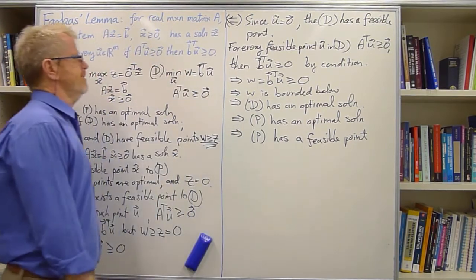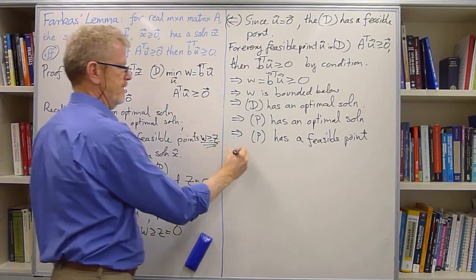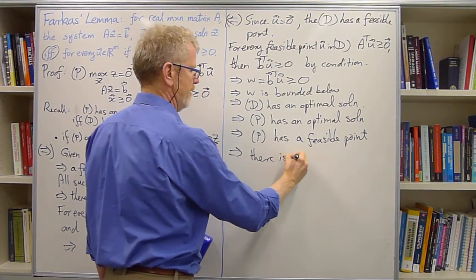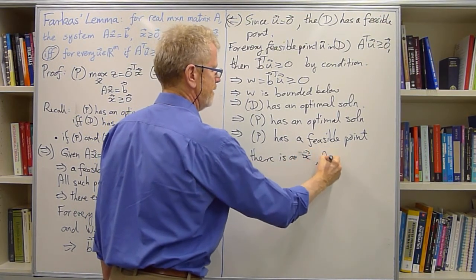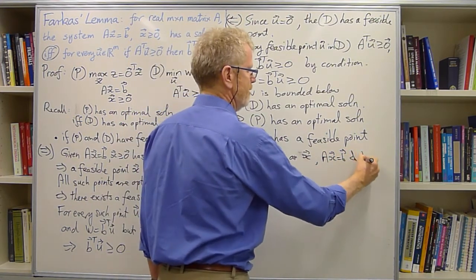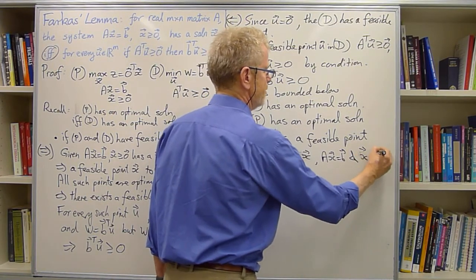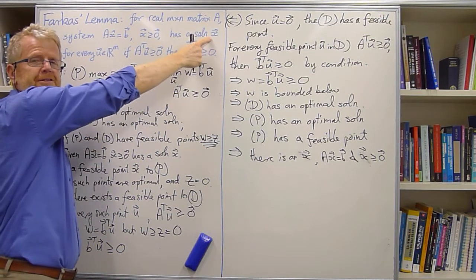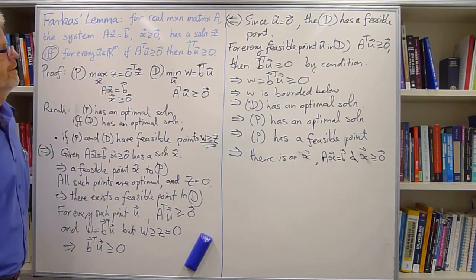And what does that say? It says there exists an X which satisfies the constraints. There is an X such that AX equals B and all the components of X are bigger than or equal to 0 because there's the constraints. And that's this condition that we need to prove. Hence, Farkas's lemma holds.